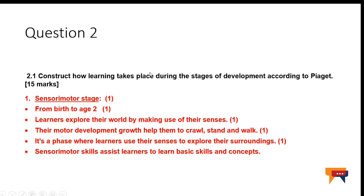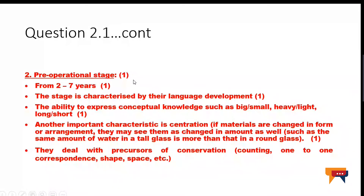If you look at question 2.1, you will see that it's long — construct how learning takes place during the stages of development according to Piaget. The first thing you needed to do was to mention the stage, like the sensory motor stage, and you get a mark for that. Then you say what that stage is from — from birth to about age 2 — another mark. Then you start explaining what happens during that stage, and for every point you wrote, you get a mark. Then you move on to the second stage.